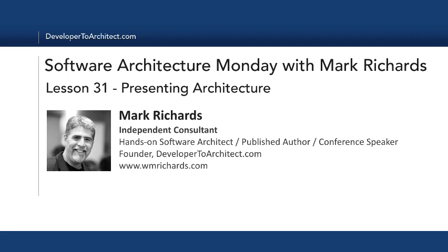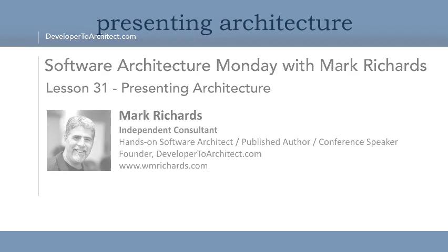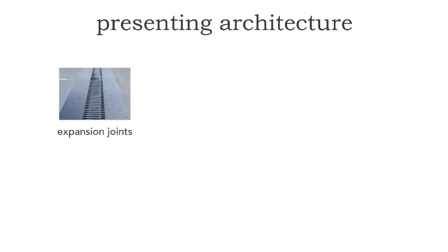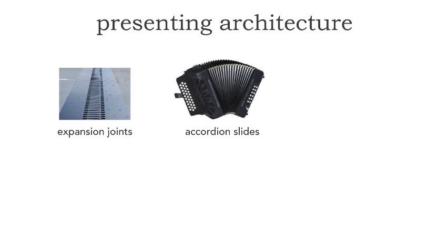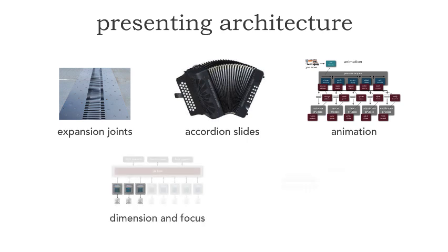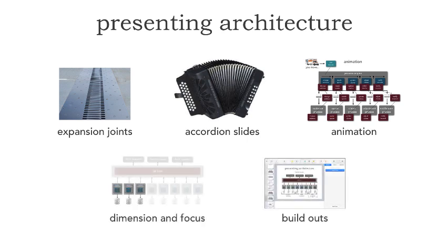Today's lesson, number 31, will be about presenting software architecture. Many times when we have to present to C-level executives, other architects, or other developers, we have to convey our architecture. I want to show you five basic tips for effective ways of conveying our architecture to any kind of stakeholder: expansion joints, accordion slides, animation, dimension and focus, and finally build-outs. Let's take a look at each of these.